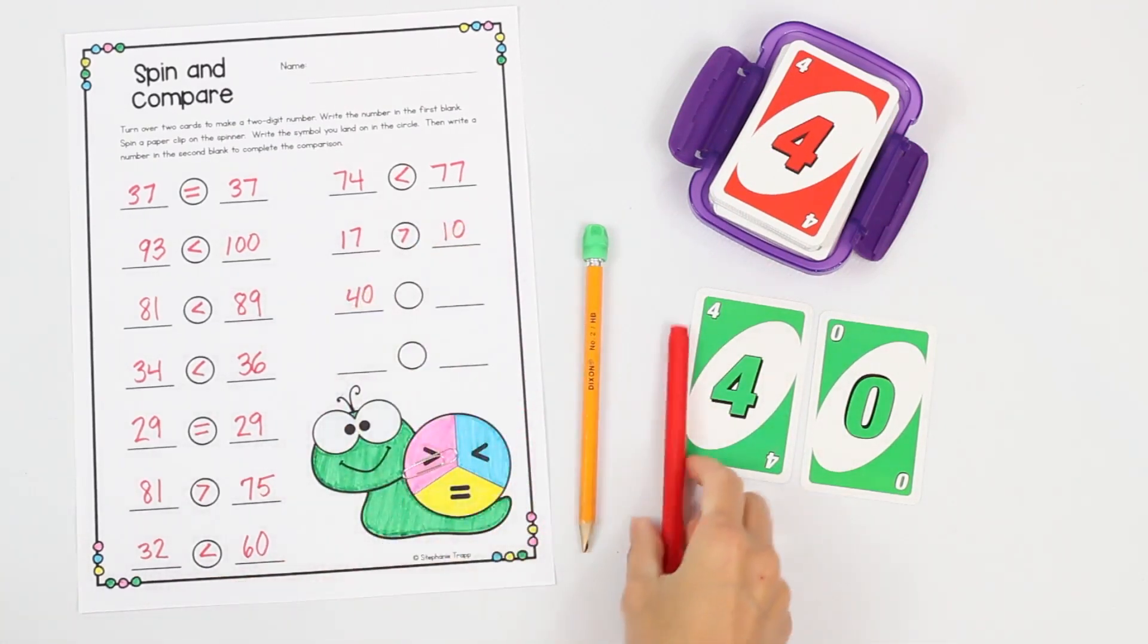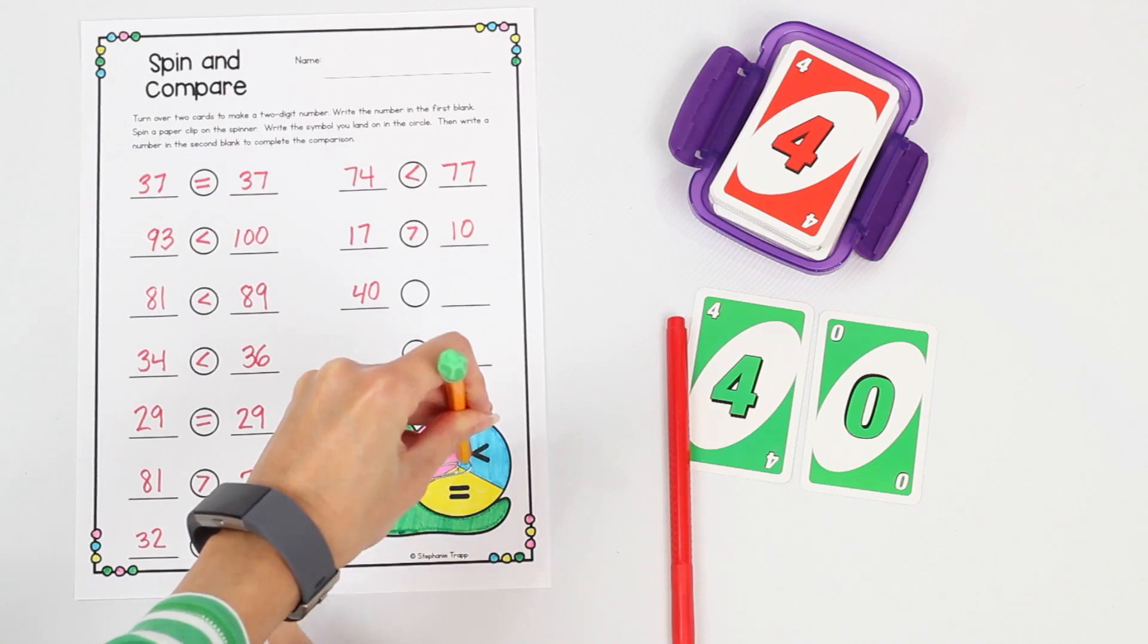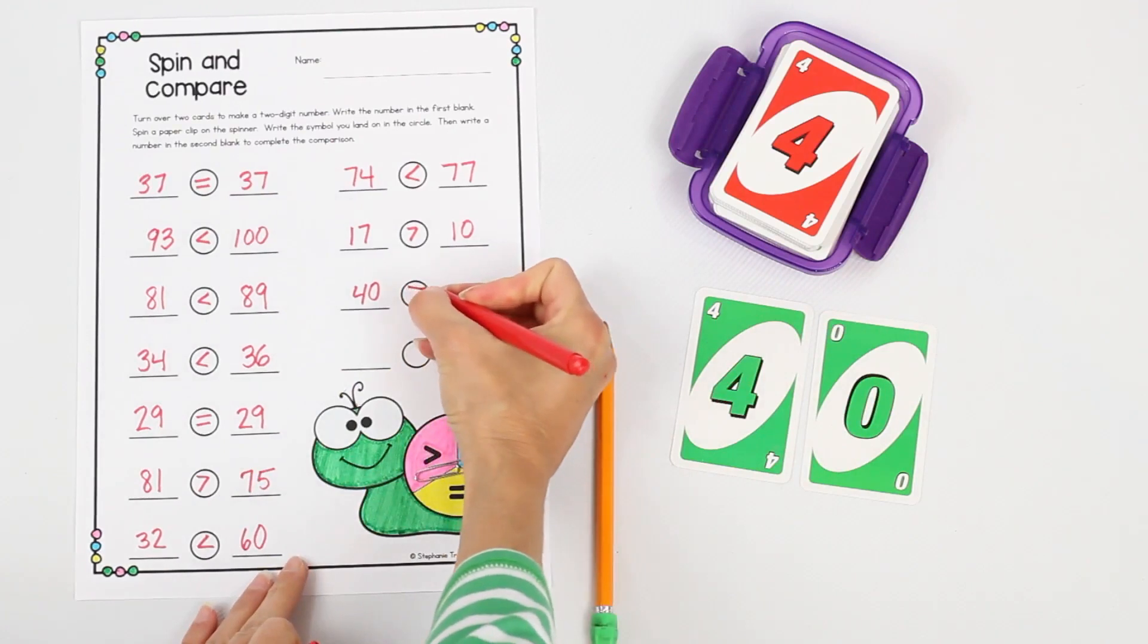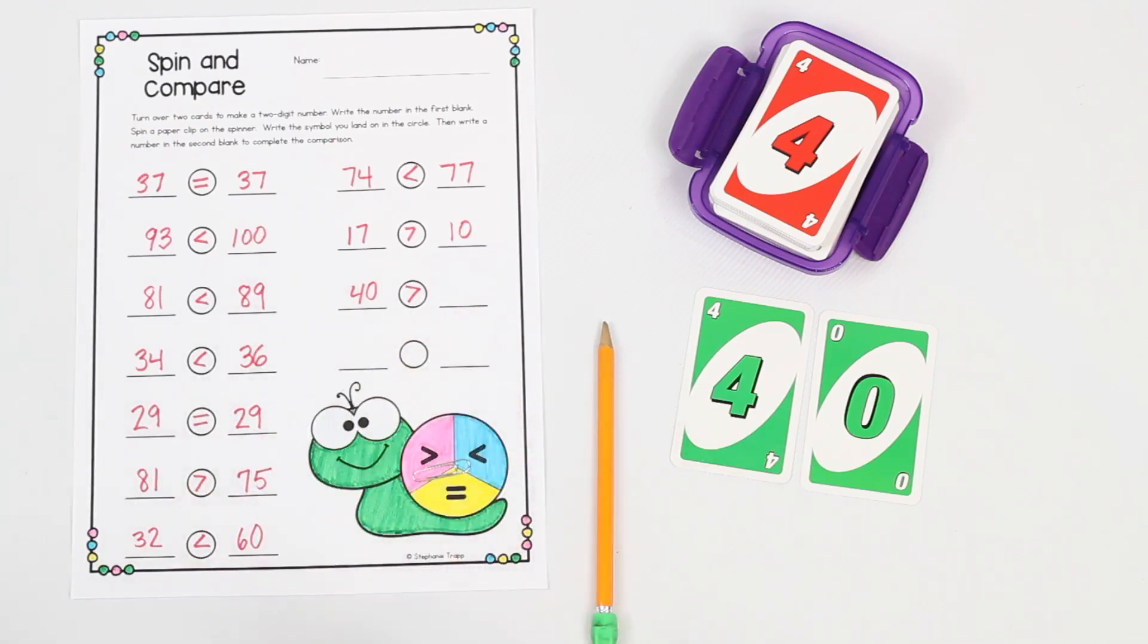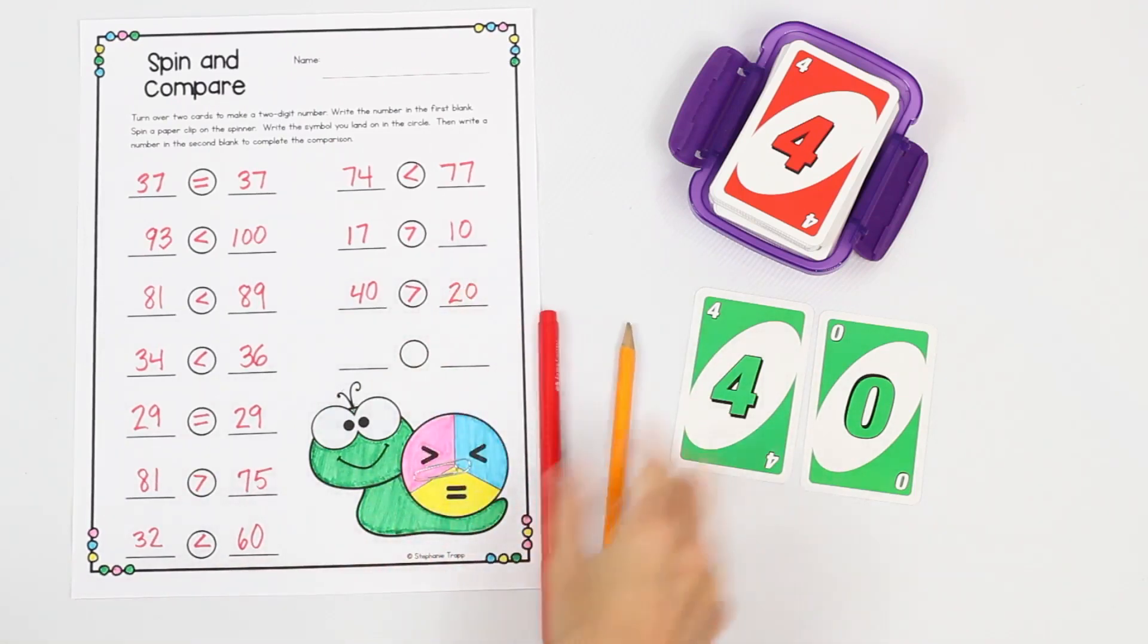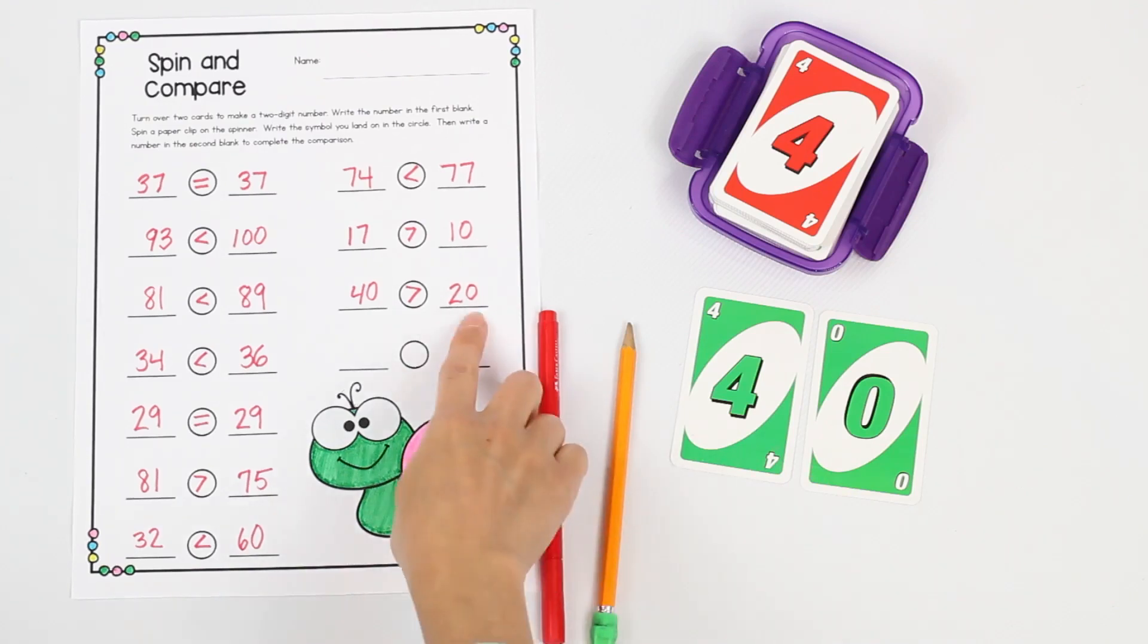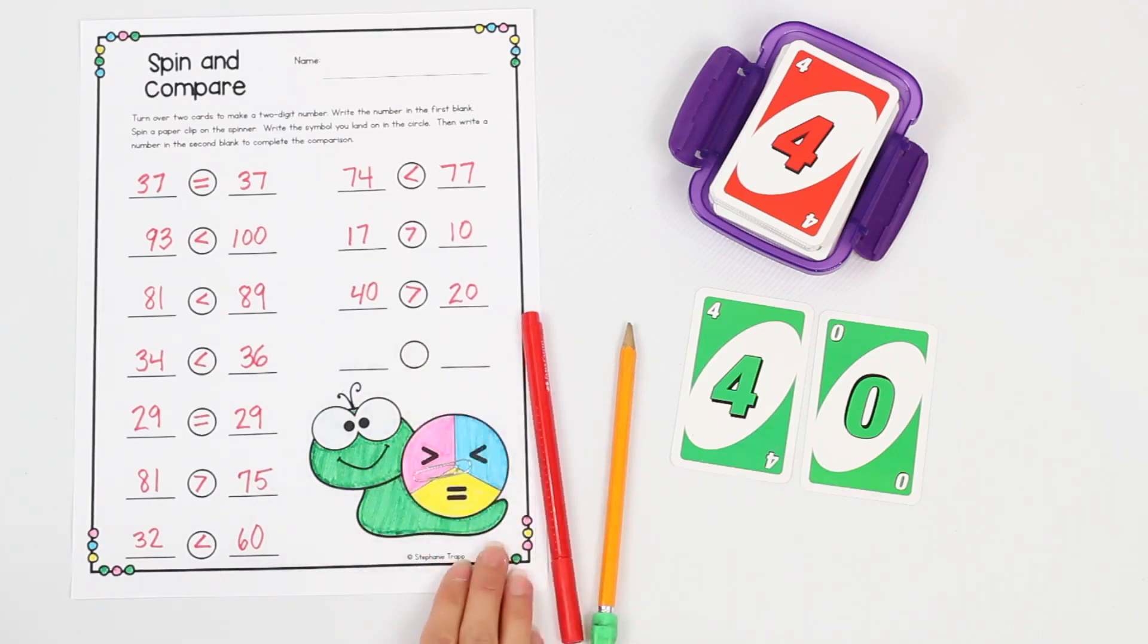And now they're going to spin a paper clip to see which symbol they land on. Oh, I'm kind of right on the line on that one. Now I landed on the greater than symbol. So that's the symbol I'm going to write. And now I need to think of a number that is less than 40 to make my inequality true. And I'm going to write the number 20. Students keep drawing and making numbers, spinning the paper clip to see which symbol they're going to use, and then filling in the inequality to make it true. It's a fun game for students to play, and I find they like drawing the cards to see which numbers they make. But then it gives them an opportunity then to come up with numbers on their own to finish the inequality.